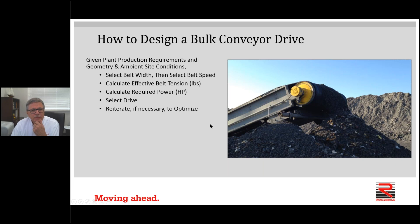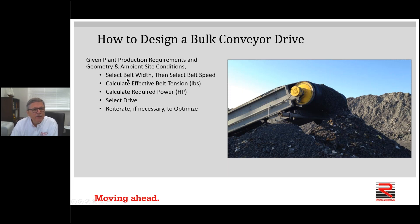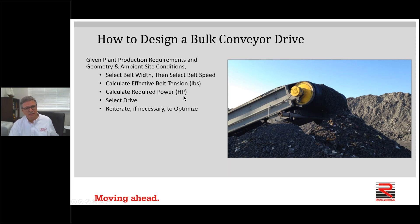To use the program to design a bulk conveyor drive: given plant production requirements such as required handling rate in tons per hour, geometry such as conveyor length, and ambient site conditions such as elevation or temperature, you need to select a belt width, then select a belt speed — or vice versa. It's important to optimize those two parameters. Once done, you calculate TE effective tension in pounds, derive your required power, then select the drive. If necessary, you reiterate to optimize.